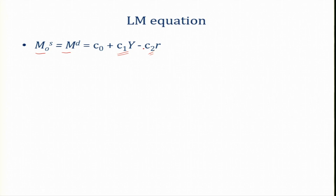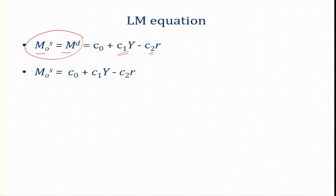The parameter c2 denotes the interest elasticity part of money demand — higher the rate of interest, lower the money demand, due to the opportunity cost of holding money. That is negatively related. At equilibrium, Ms equals Md. Rewriting: M⁰s = c⁰ + c1·y − c2·r. This relationship should now be clear.